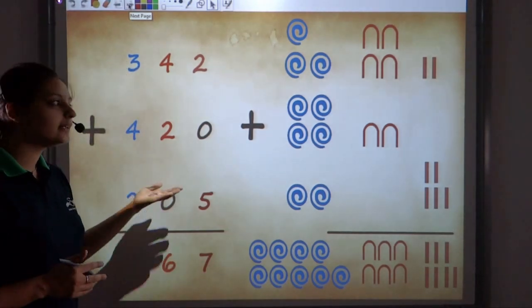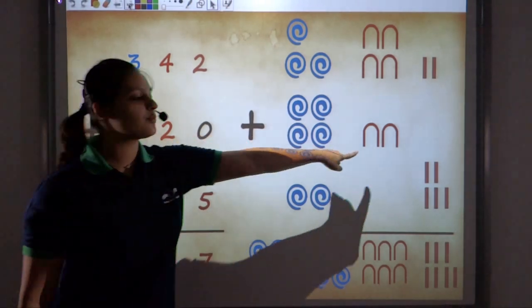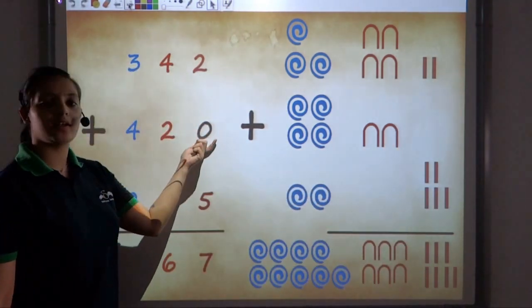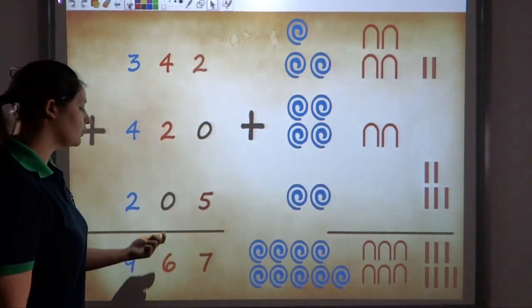What is clear between these two number systems is that the Egyptian number system has no symbol for the number zero. There is no symbol here, or here, for the number zero.